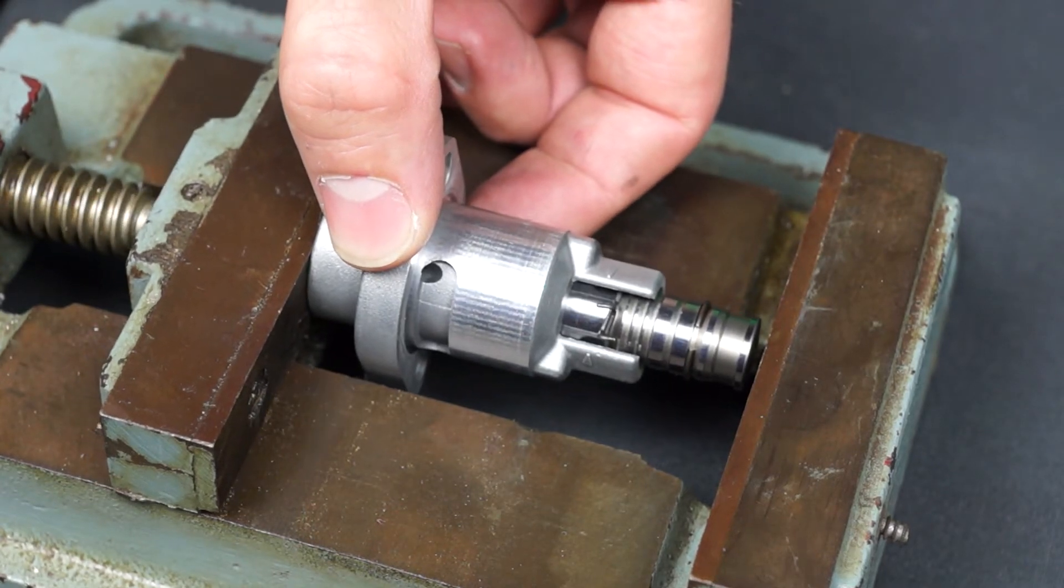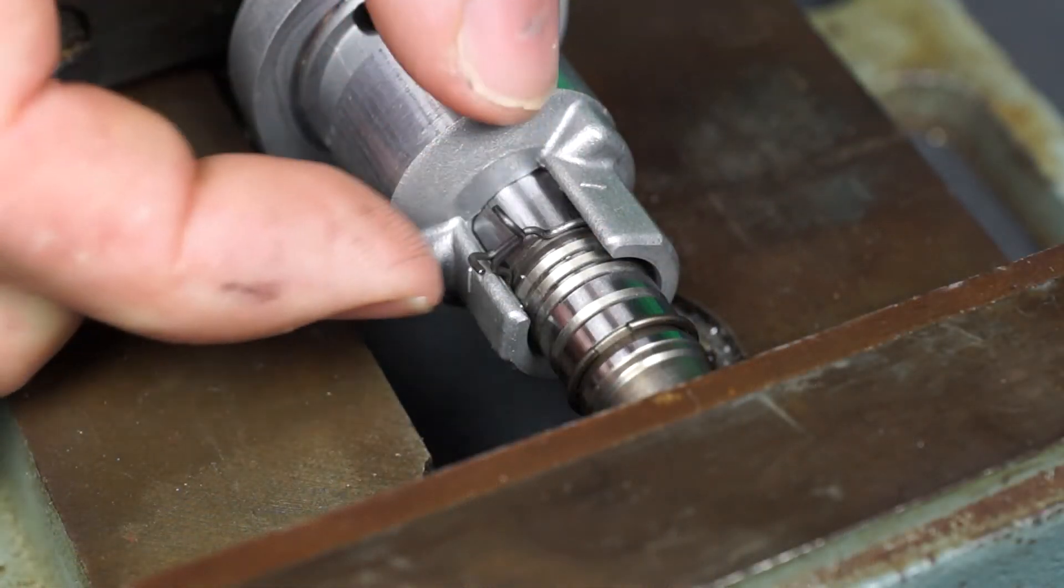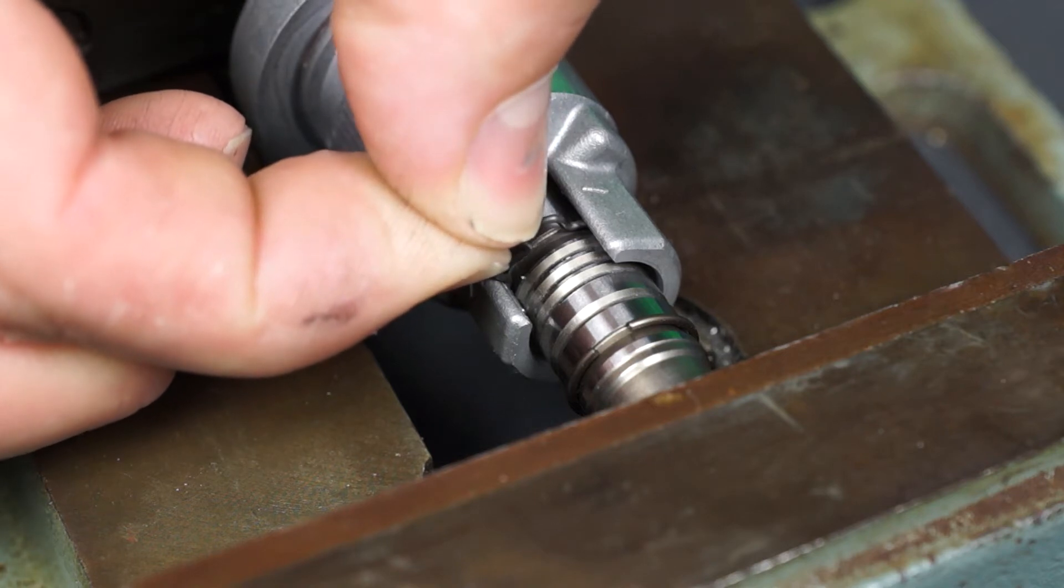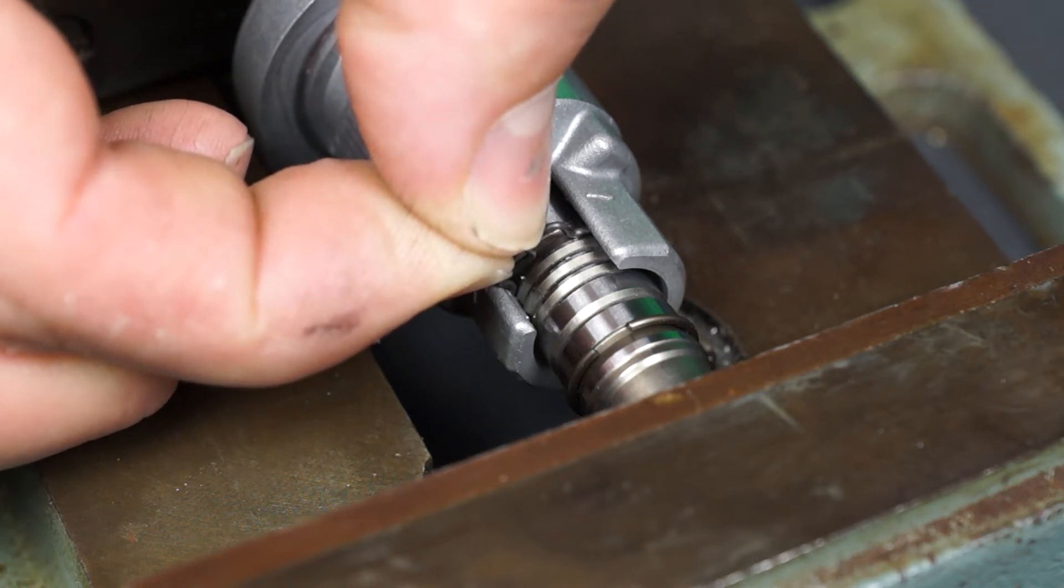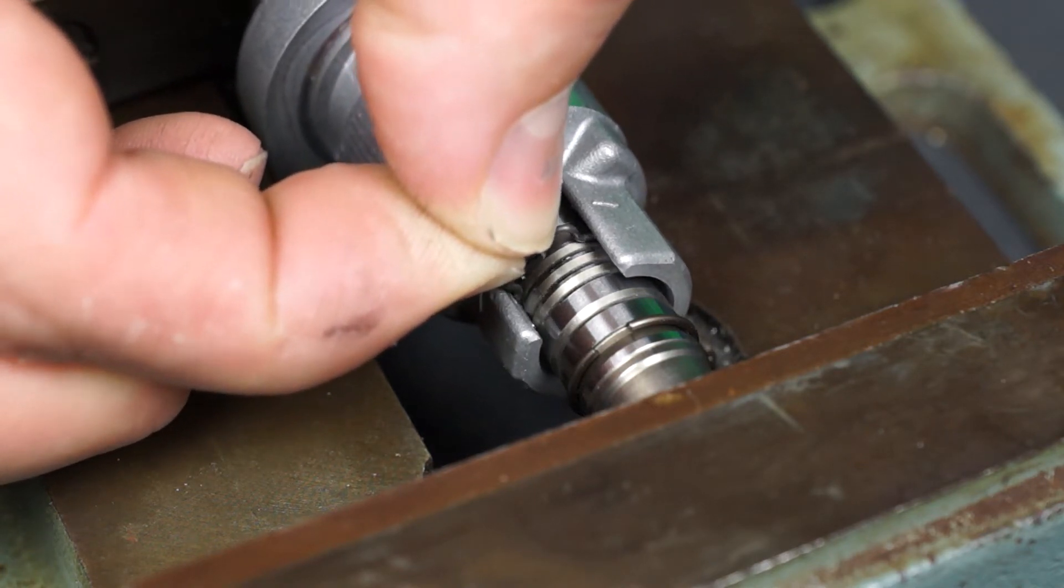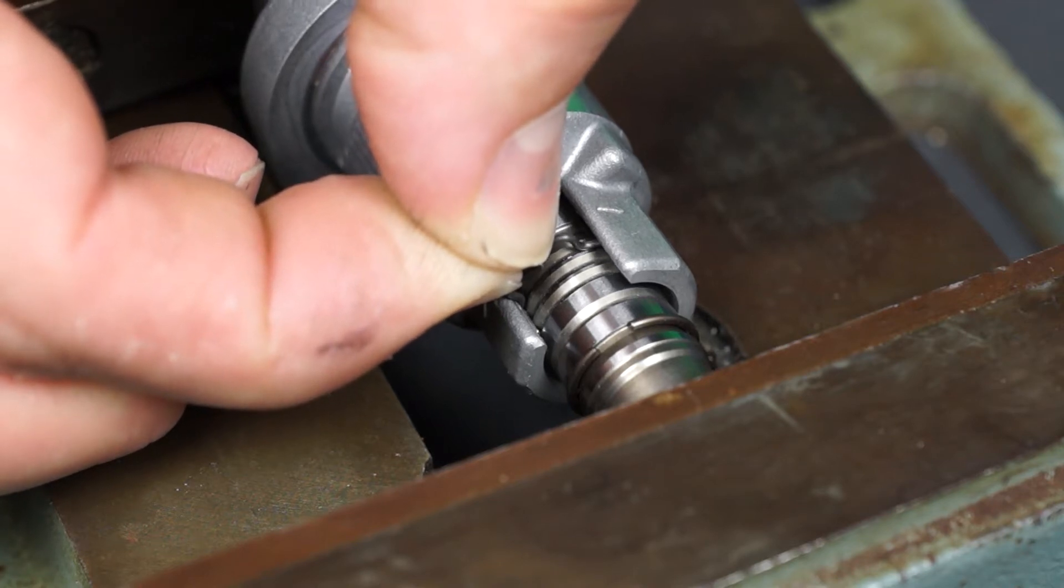Use a small hobby or machinist vice to slowly compress the timing chain tensioner rod into the tensioner housing while squeezing the tensioner clip. The clip should always be free to move in the housing as you tighten the vice. Tighten the vice very slowly while keeping the clip squeezed.